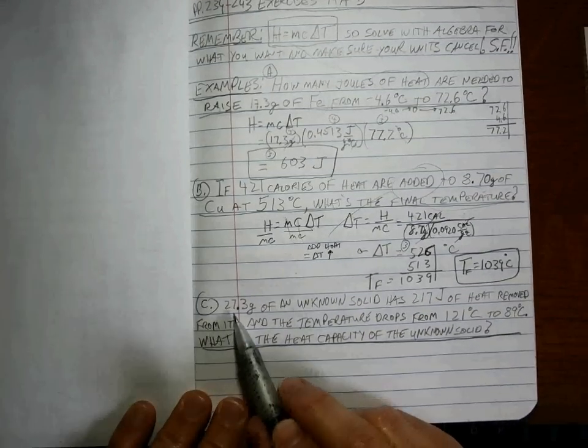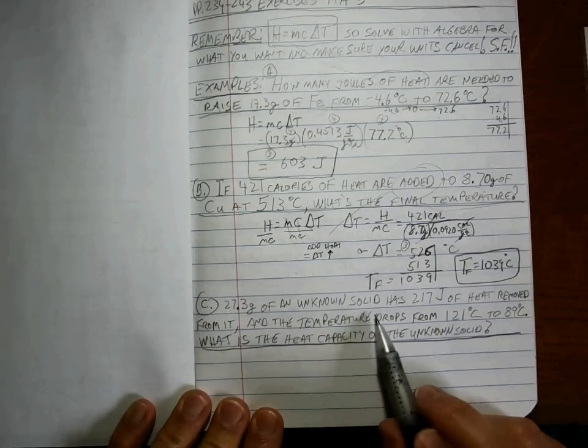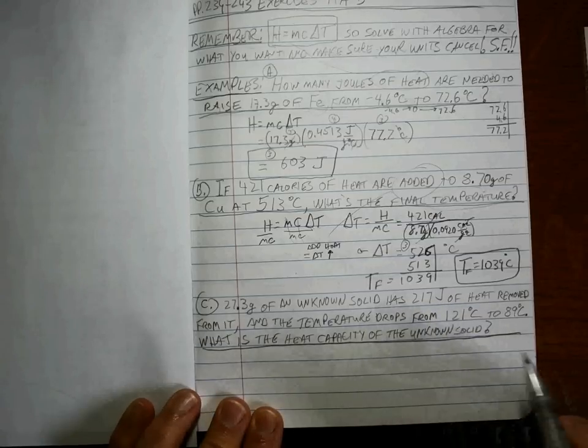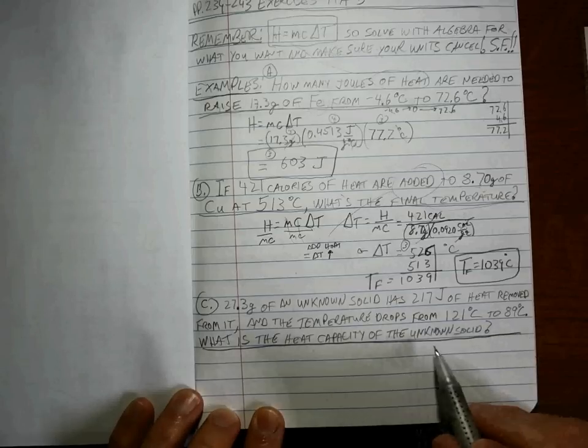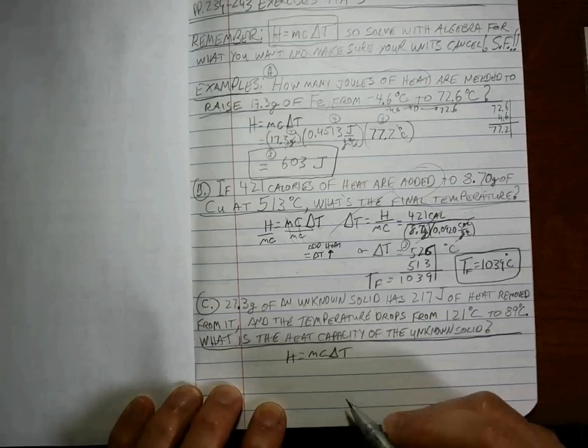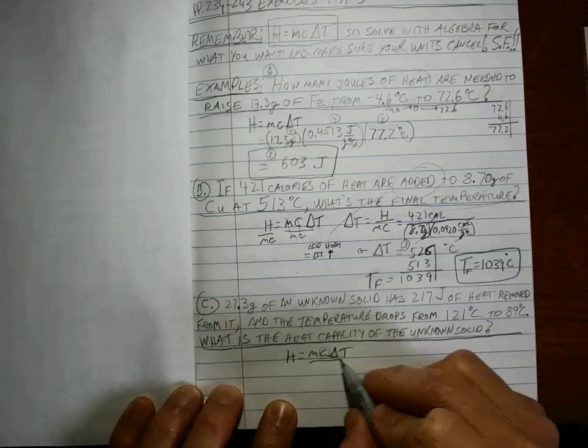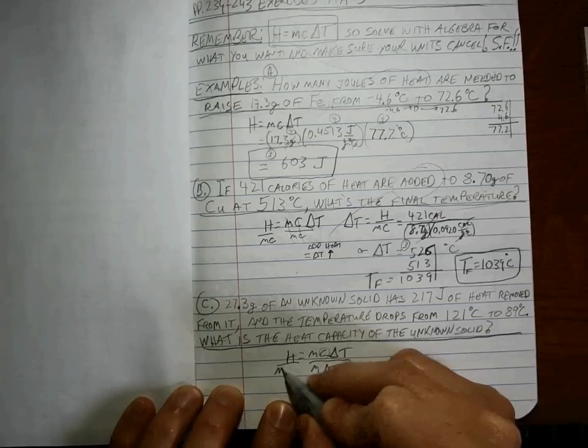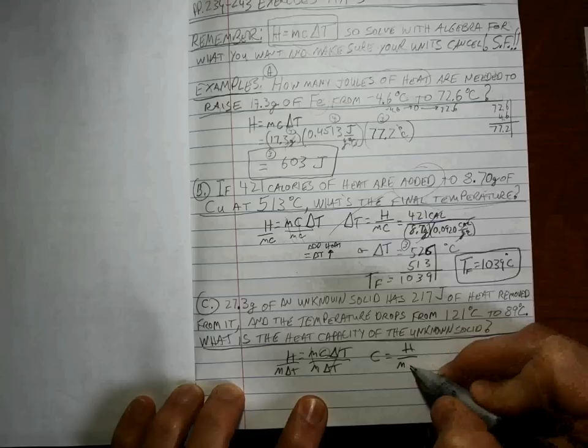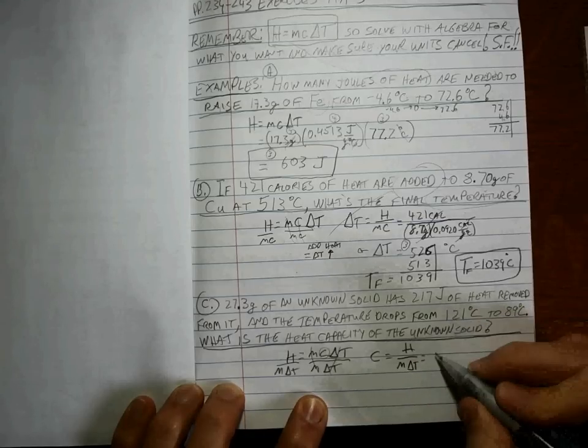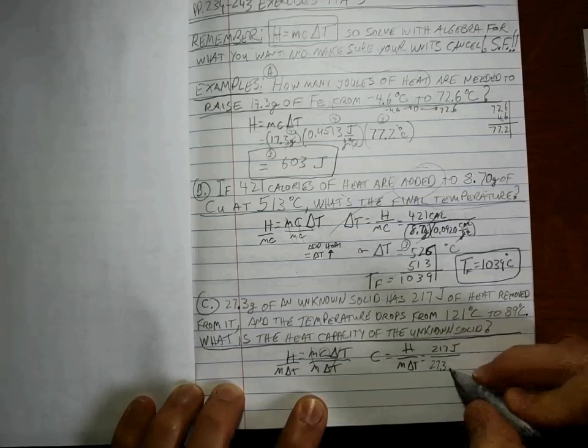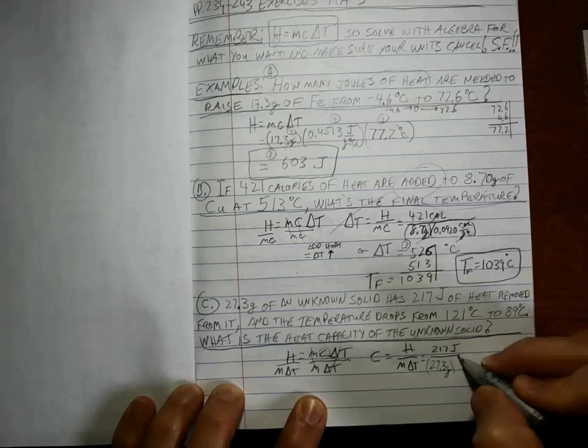Alright, one last one to go. So 27.3 grams of an unknown solid has 217 joules of heat removed from it, and the temperature drops from 121 to 89. What's the heat capacity of the unknown? Well, it's H = mc∆T again, but this time we're solving for c. Do the algebra, write it out, make sure it's right. C = H over m over ∆T. We know H is 217 joules, we know mass is 27.3 grams.